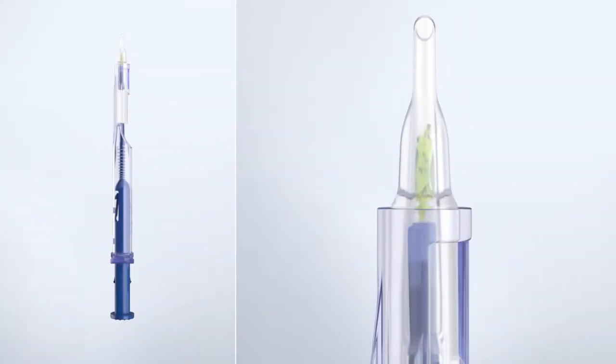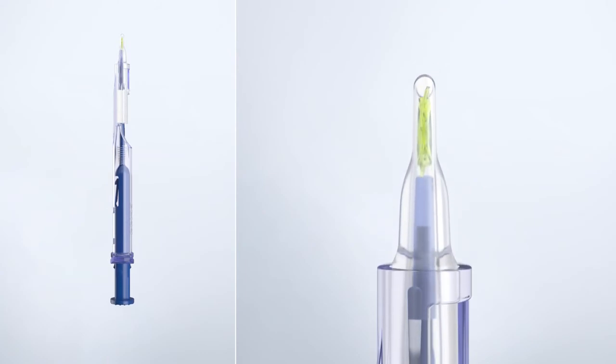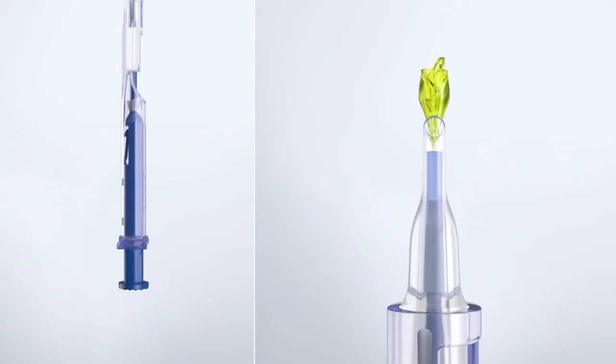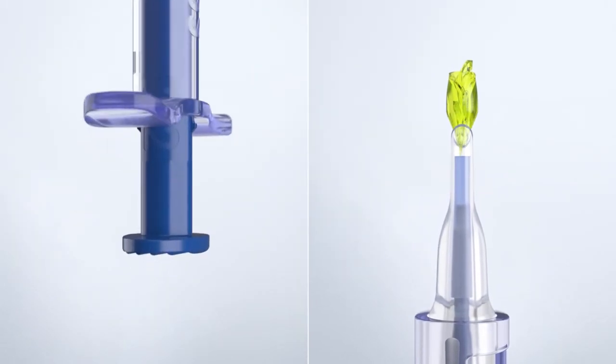Slowly advance the lens until it has been released from the injector. If delivery is incomplete, apply additional pressure to the thumb flange to release the lens.